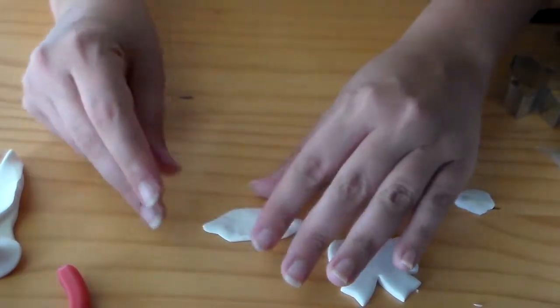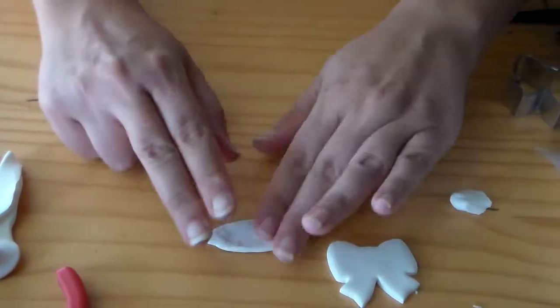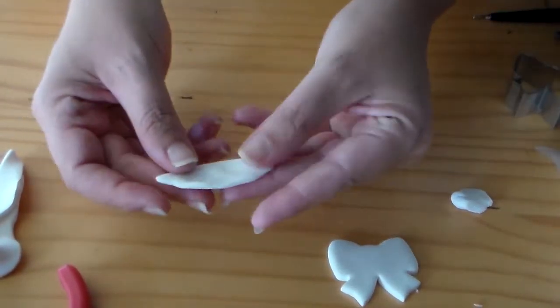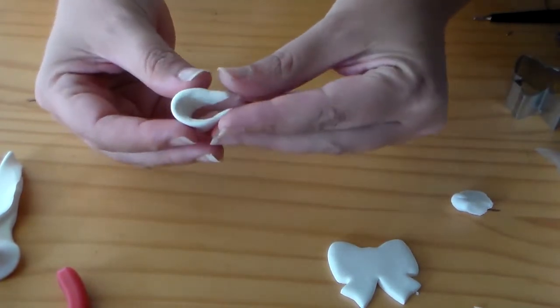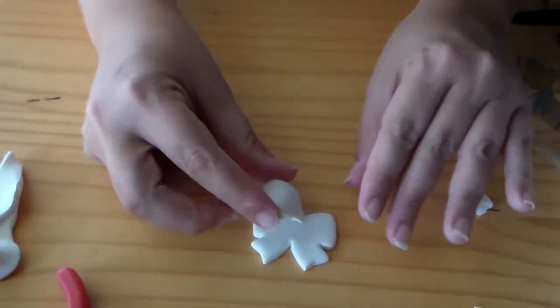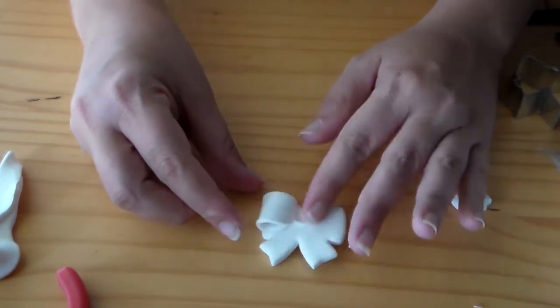But after you have this little pea pod shape, go around the edges and smooth everything out to where it's a nice even oval with tapered ends. And then fold this piece over and pinch the tapered ends together and then press that into the center of the bow to kind of secure it.